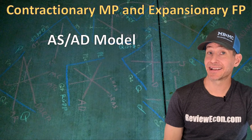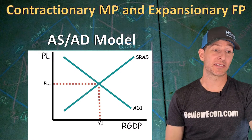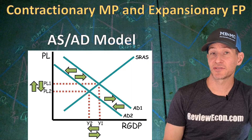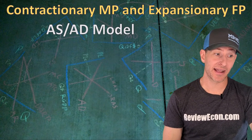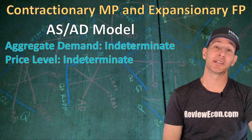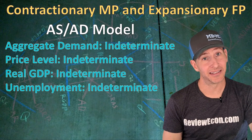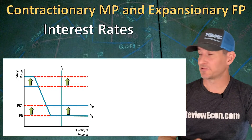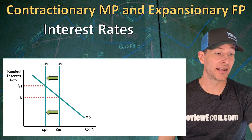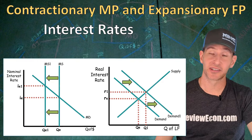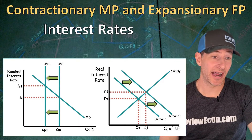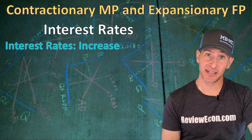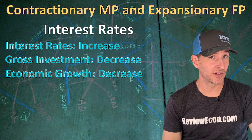Next, let's look at contractionary monetary policy and expansionary fiscal policy. On the AS-AD model, contractionary monetary policy decreases aggregate demand while expansionary fiscal policy increases it. Since they are opposing forces, the shift of aggregate demand is indeterminate. As a result, the price level, real output, and unemployment are all indeterminate. But when it comes to interest rates, whether we have ample reserves — with an increase in the interest rate in the reserve market graph — or a scarce reserve system with a leftward shift of money supply resulting in a higher interest rate, and in the loanable funds market an increase in demand or decrease in supply of loanable funds, both markets show an increase in the interest rate. So monetary and fiscal policy are working together here. Both interest rates have increased, meaning we will definitely see a decrease in gross investment and a decrease in the economic growth rate.